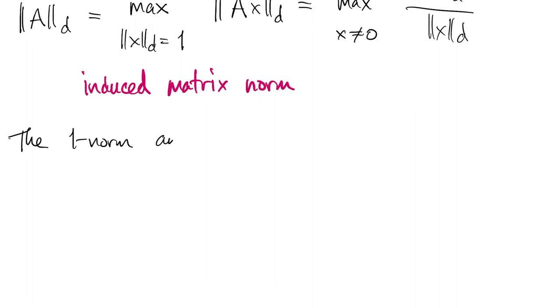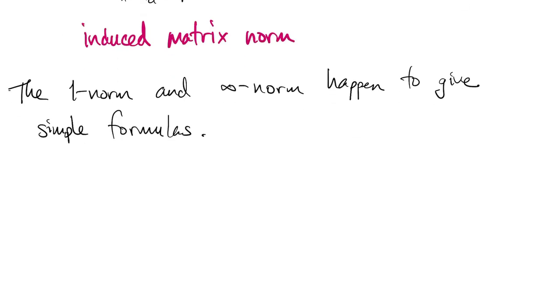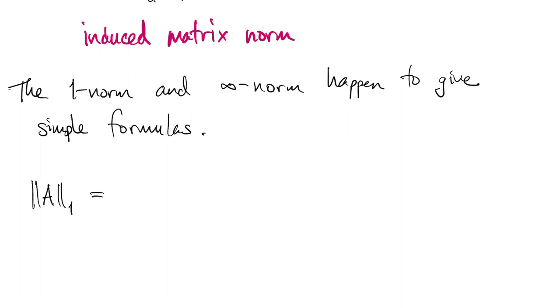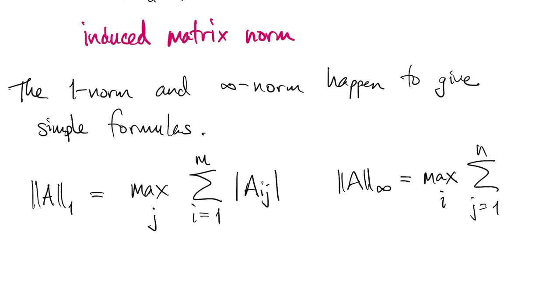Now when you work through the details of the definitions, it so happens that both the one norm and the infinity norm boil down to simple formulas. So these aren't definitions, but they are equivalent formulas. So the one norm of a matrix is equal to the maximum over all the columns of sums down the rows in absolute values. And the infinity norm is the maximum of the rows of the sums across columns.